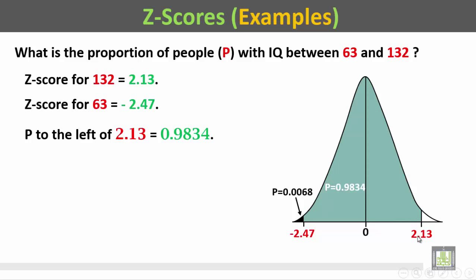The area to the left of Z-score 2.13 is 0.9834, and the area to the left of Z-score minus 2.47 is 0.0068.